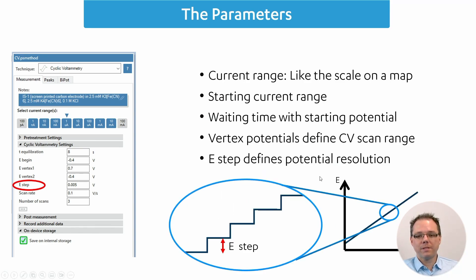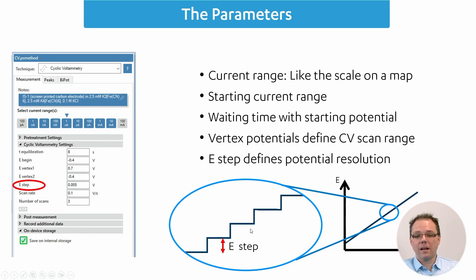The next parameter, E-step, tells you the resolution of your CV. Our potentiostats are digital, so they cannot produce a perfect continuum — they work with little steps to change the potential. So your ramp is not a perfect line but a small series of steps, and how high these steps are is defined by the step potential. With an E-step of 5 mV, for example, a point with the current value is recorded every 5 millivolts.